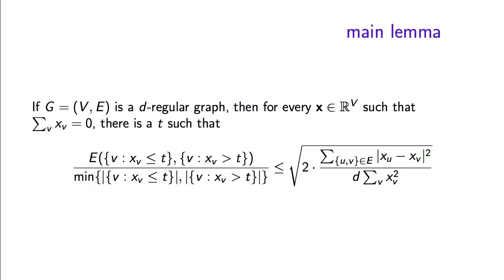So this is what we are going to show now: that for every regular graph and for every vector whose entries sum to zero, there is a cut derived by picking a threshold t and separating vertices into those labeled smaller than t and those labeled bigger than t by vector x, such that the expansion of this cut is at most the square root of twice the Rayleigh quotient of x.